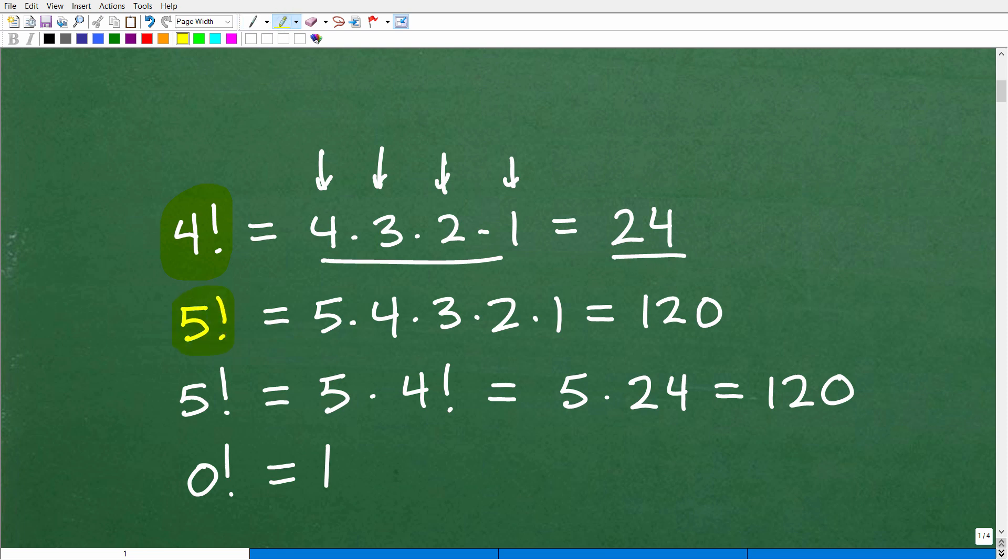So let's take a look at 5 factorial. What is that equal to? Well, again, we're going to start with this number 5, and we're just going to start counting down. 5 times 4 times 3 times 2 times 1. This is 5 factorial. So when I do this entire product, I'm going to get 120.